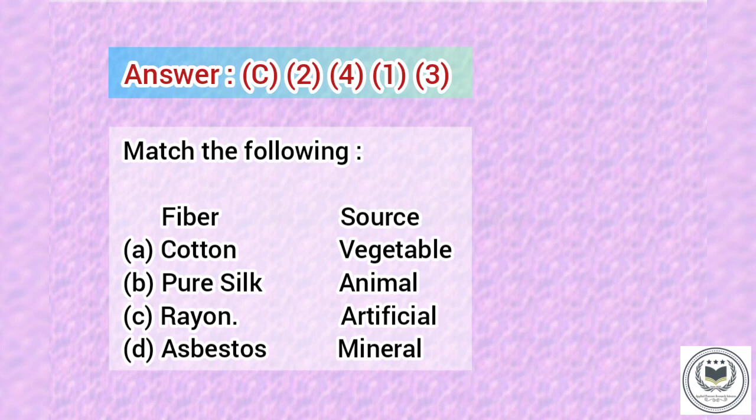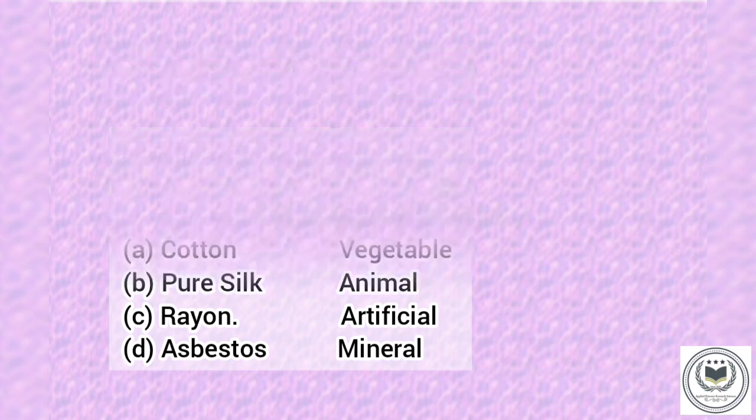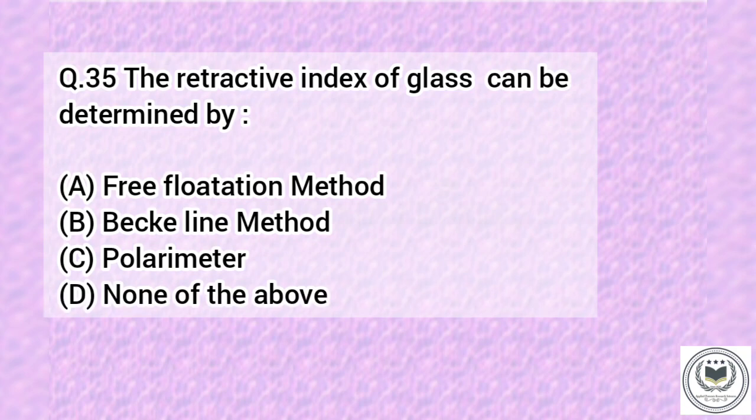Cotton is matched with vegetable, pure silk is matched with animal, rayon is matched with artificial, and asbestos is matched with mineral.